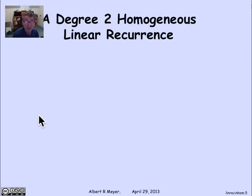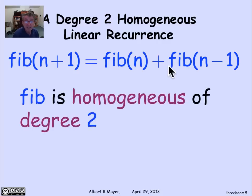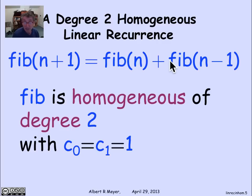Now we've seen one before, actually, a very familiar one. The Fibonacci numbers. Remember, fib of n plus 1 is equal to fib of n plus fib of n minus 1. And of course, it's degree 2, and the coefficients in both cases are 1, so c0 is 1 and c1 is 1. So that's an example of a homogeneous degree 2 recurrence that we've seen already.